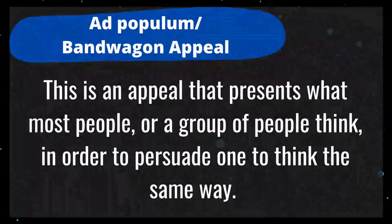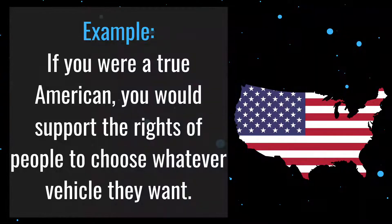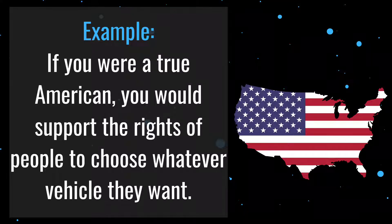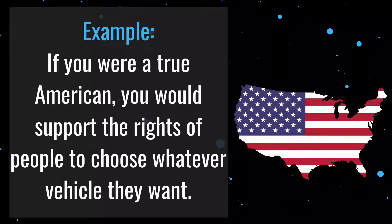Number 9 is ad populum or bandwagon appeal. This is an appeal that presents what most people or a group of people think in order to persuade one to think the same way. Getting on the bandwagon is one such instance. For example: if you were a true American, you would support the rights of people to choose whatever vehicle they want. The author equates being a true American — a concept people want to be associated with, particularly in a time of war — with allowing people to buy any vehicle they want, even though there is no inherent connection between the two.